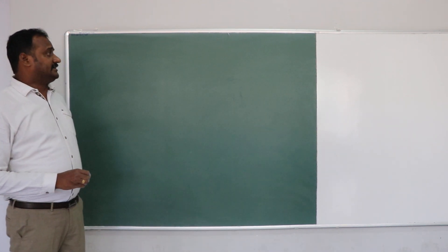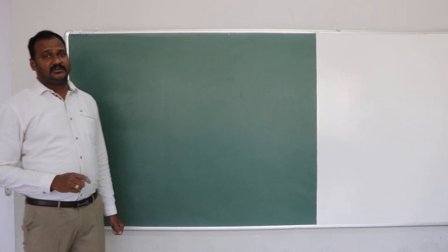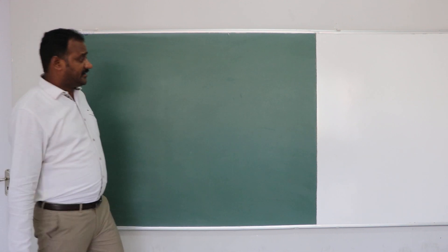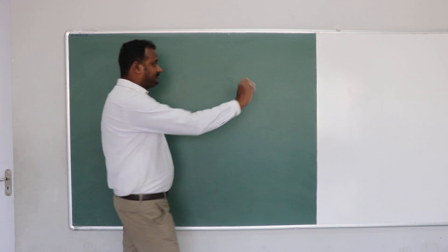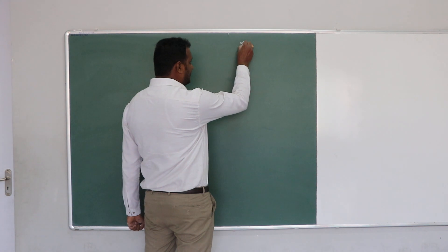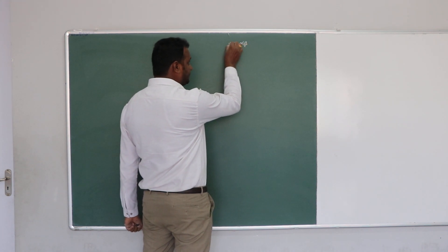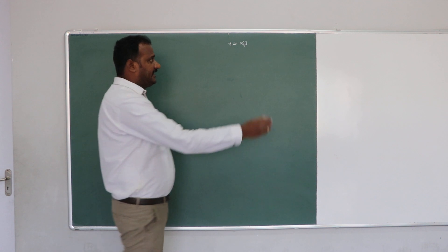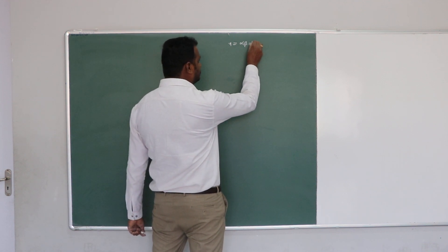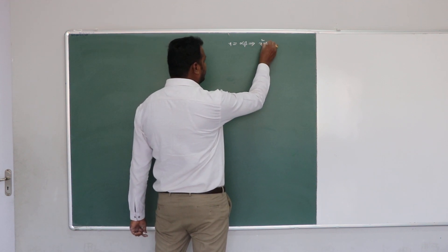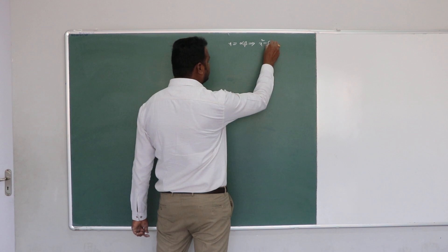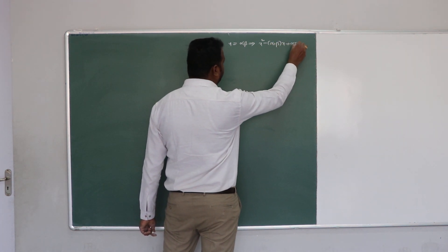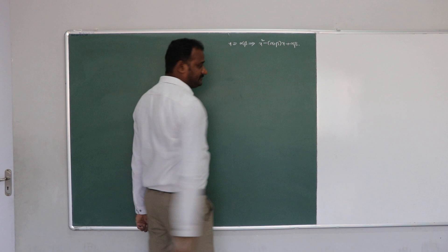Now my lesson is about the relationship between zeros and equations. Remember that if alpha and beta are the zeros, their values of x are alpha and beta. Then the quadratic formula when two zeros are alpha and beta is x squared minus (alpha plus beta) times x plus alpha times beta.